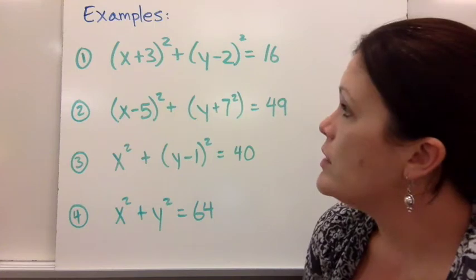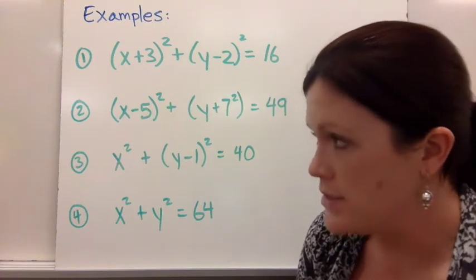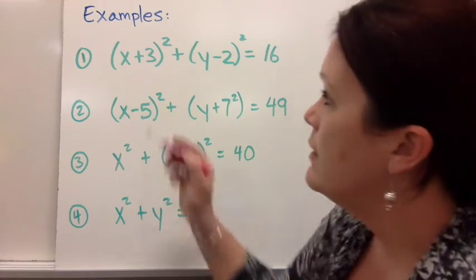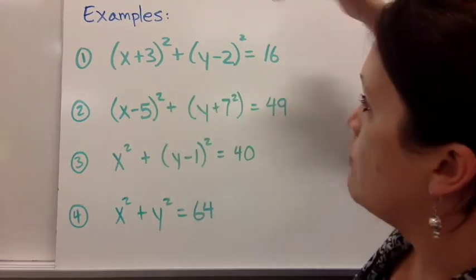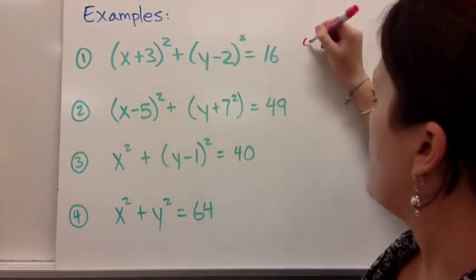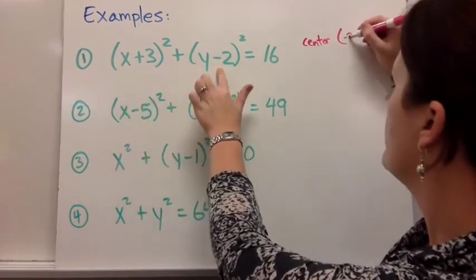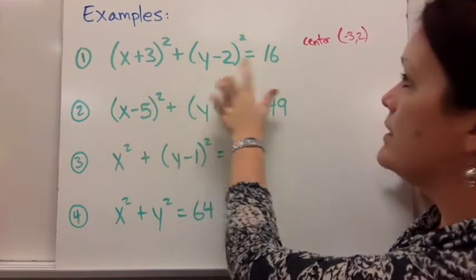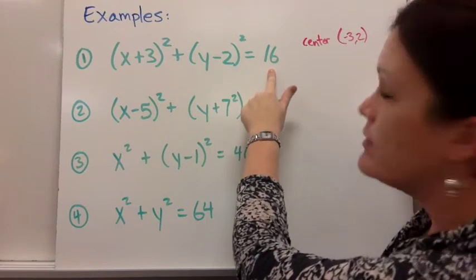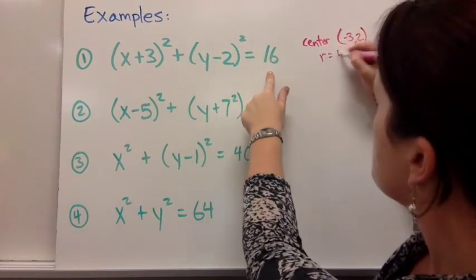So for number one, if I have to pick out the center point, since standard form says x minus h and y minus k, I would say that my center point is at the point (-3, 2). And my radius would be the square root of this number, so the radius is just 4.